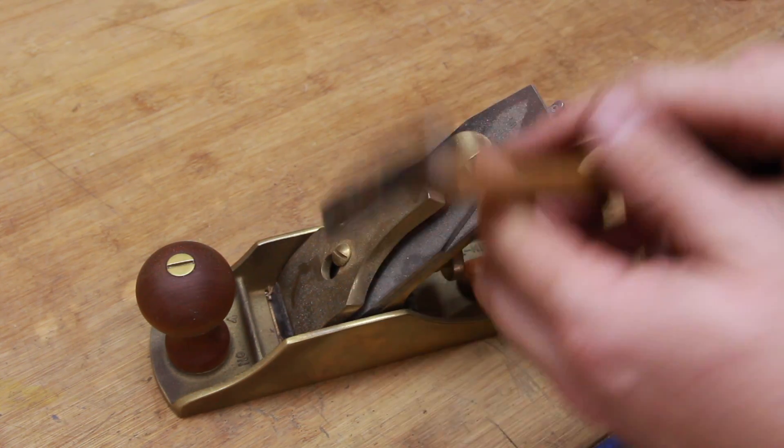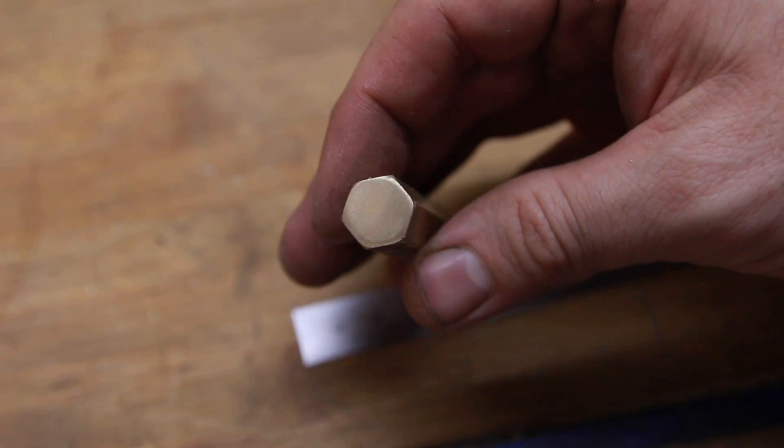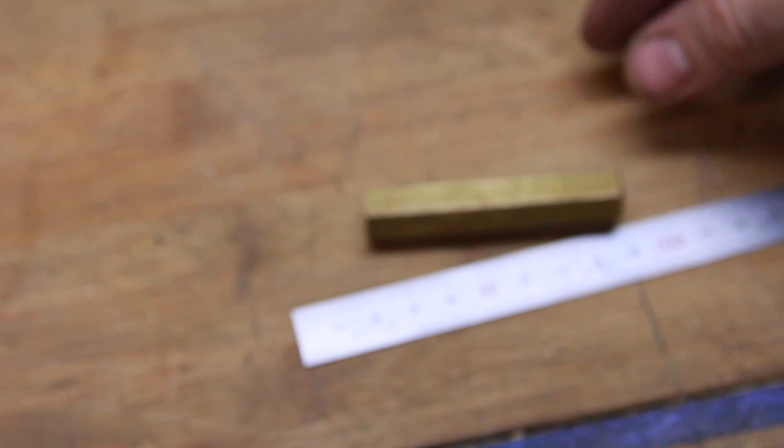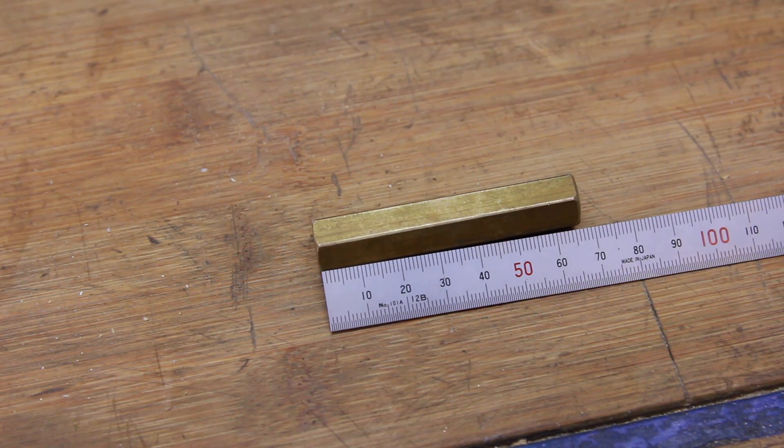I've been using a steel hammer to fine adjust blade position laterally on hand planes. Of course, this is no proper way to treat your planes, so I decided to make a small brass hammer.